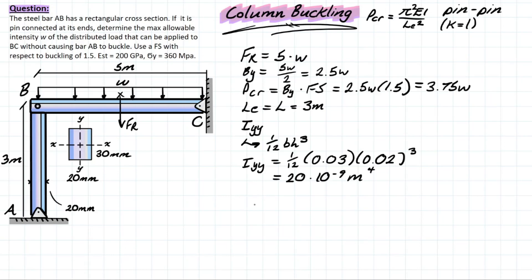Now we can start plugging into our equation here. We have everything solved for. We have 3.75w, which is going to be equal to pi squared, and then the modulus elasticity, which is 200, and that's in GPa. So converting that to pascals, we have to do 10 to the 9, so that's going to give us newton meters squared. Then we have the inertia value, which was solved for—we have 20 times 10 to the negative 9, and that is in meters to the 4. And then all of this is going to be over our effective length squared. We already know what that value is: it's 3 meters, and that's squared.